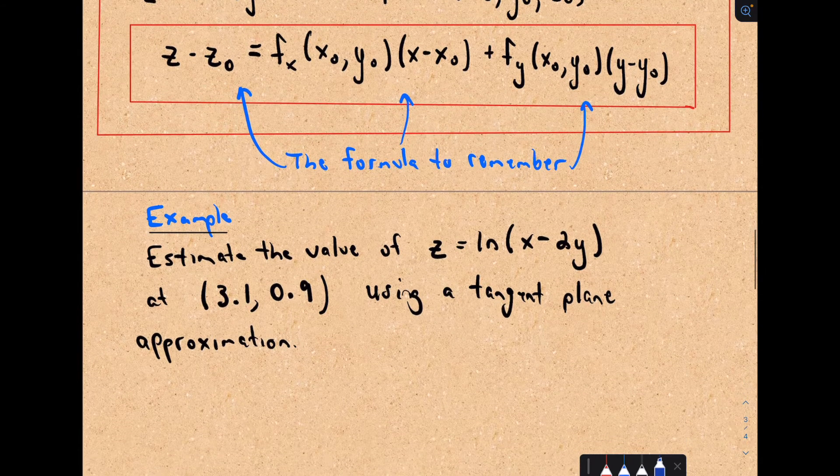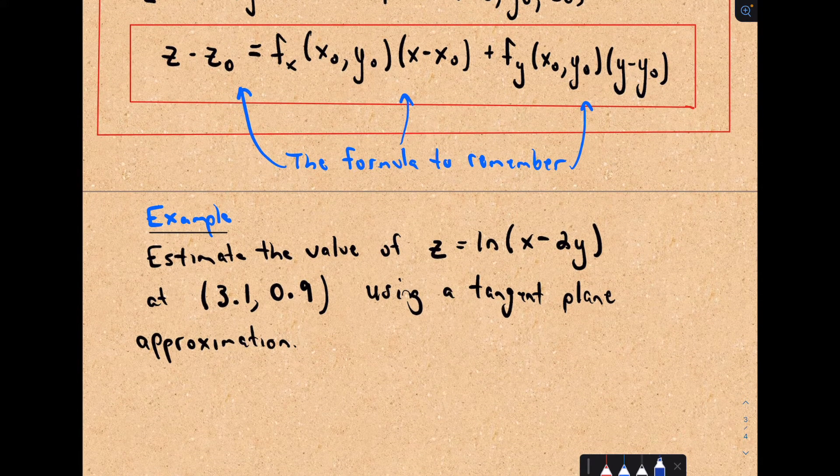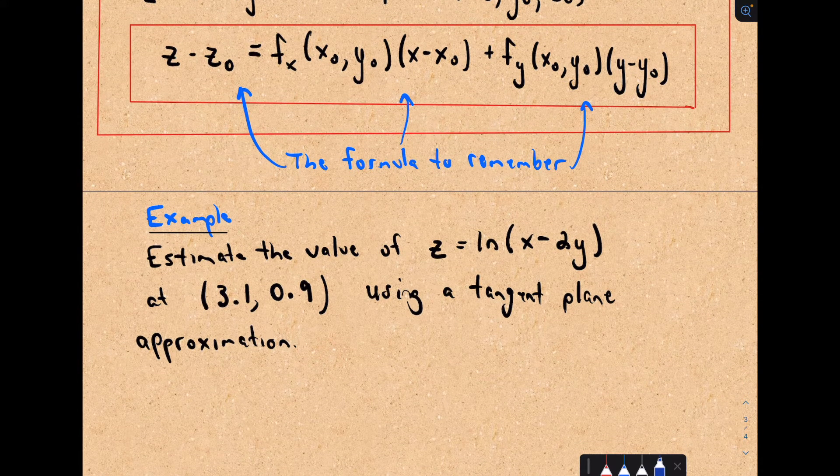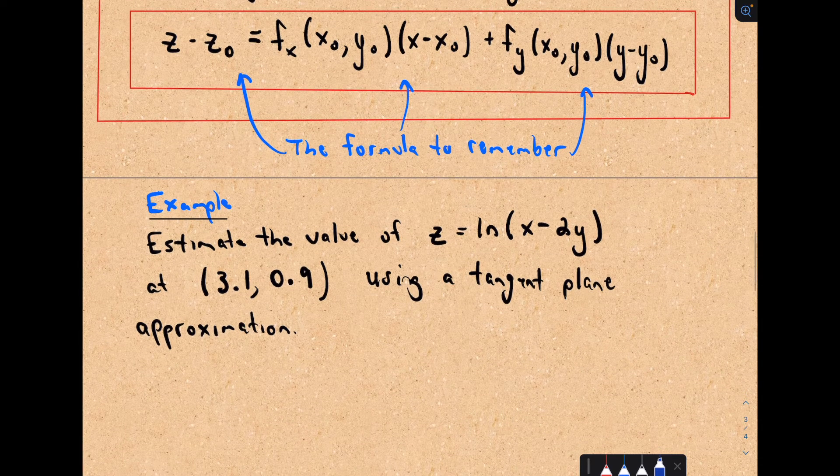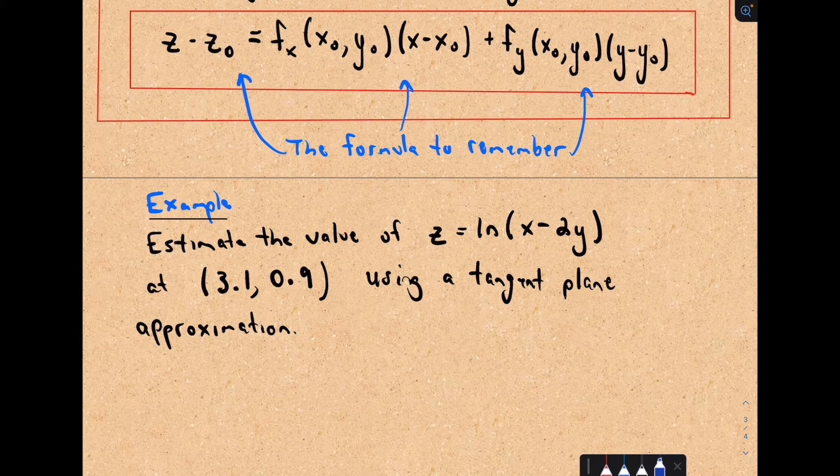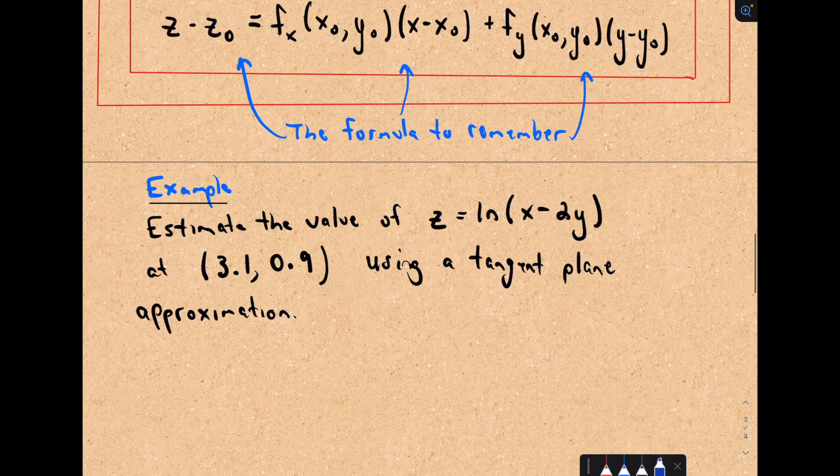Okay, so let's do an example. So z equals the natural logarithm of x minus 2y at this point 3.1 comma 0.9 using a tangent plane approximation.